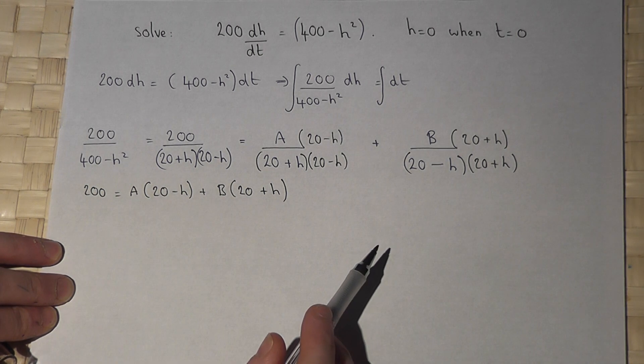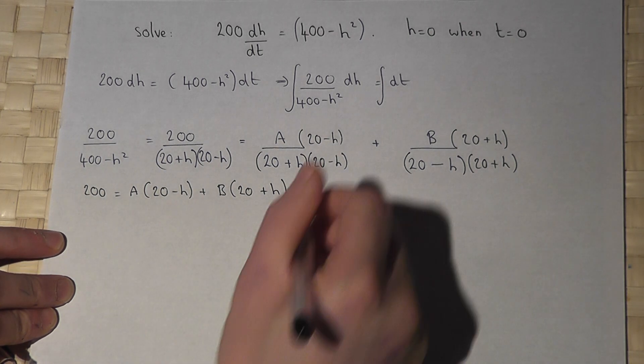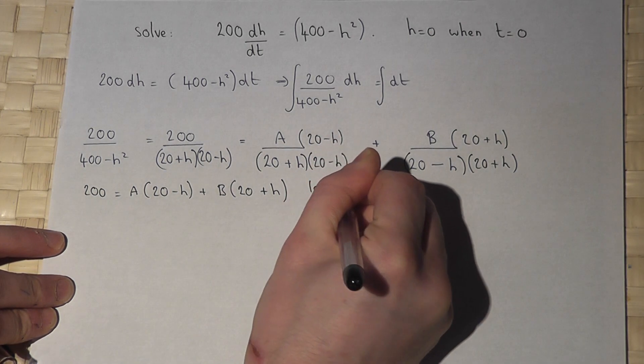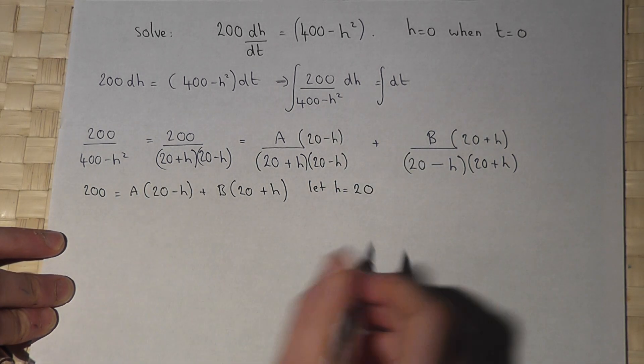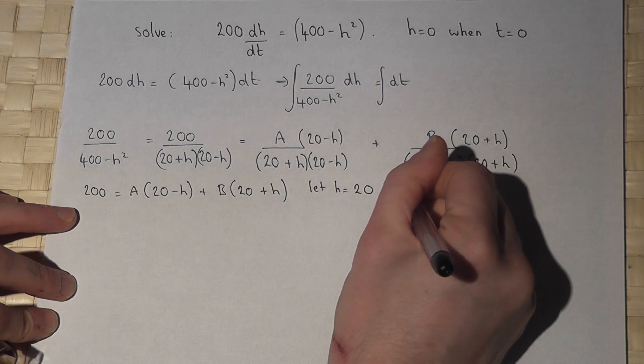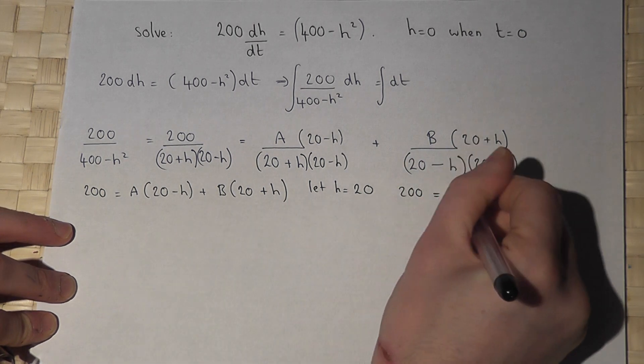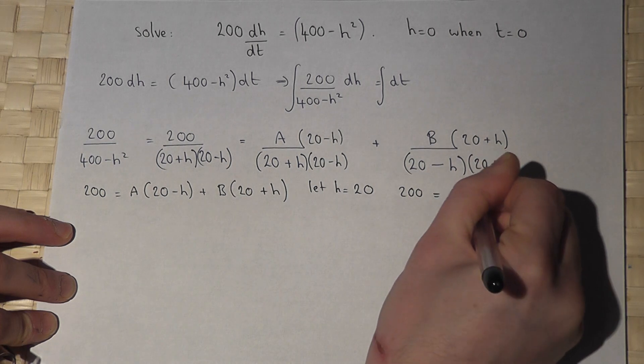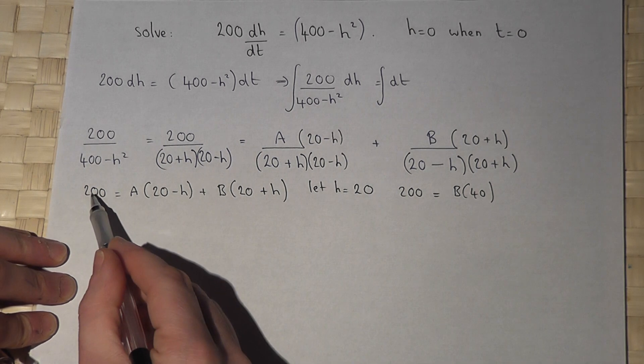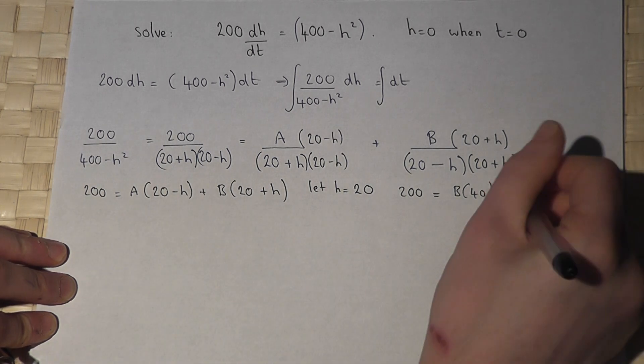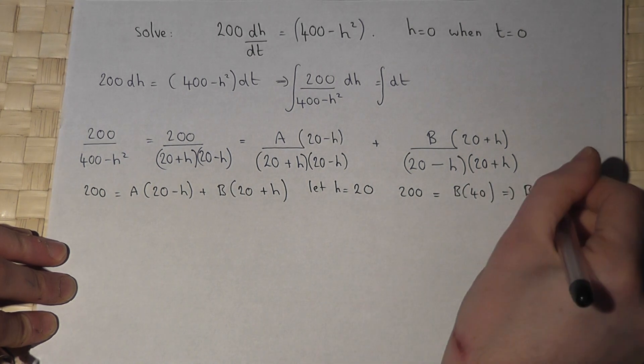And this must be true for all values of h. So if I let h equal 20, then this bracket will cancel off. So I'm left with 200 equals A times 0 plus B lots of 40. So B must equal 200 over 40, which is 5.